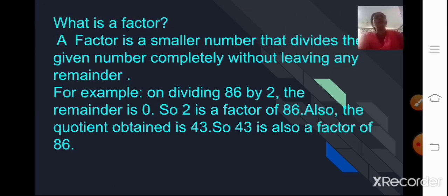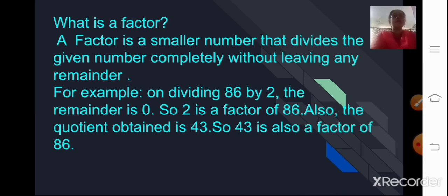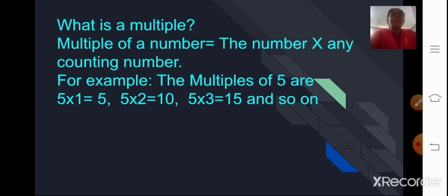Now children, what is a factor? A factor is a small number that divides the given number completely without leaving any remainder. For example, if I am dividing the number 86 by 2, the remainder is 0, so 86 is completely divisible by 2. Thus 2 becomes a factor of 86, and the quotient 43 also becomes a factor of 86. For multiples: the multiples of 5 are 5×1=5, 5×2=10, 5×3=15, and so on.